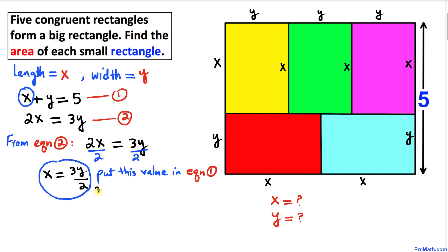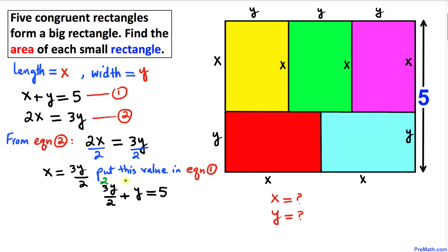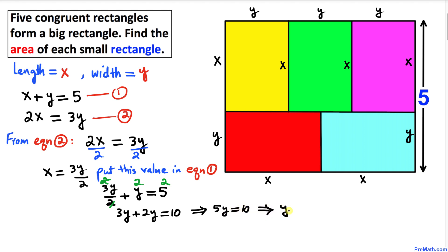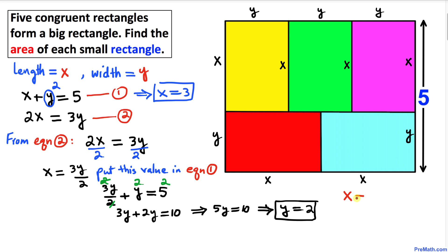Wherever we see x, I'll replace it with 3y divided by two. So we have 3y divided by two plus y equals five. Multiplying through by two removes the fraction, giving us 3y plus 2y equals ten. That simplifies to 5y equals ten, so y equals two. Substituting back into equation one: x plus two equals five, giving us x equals three.